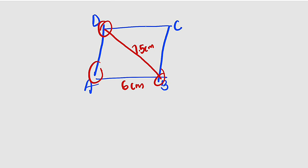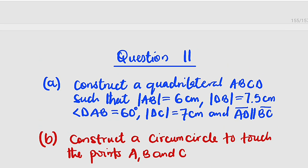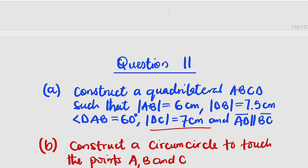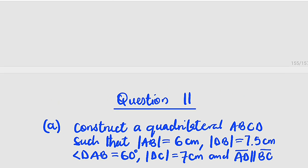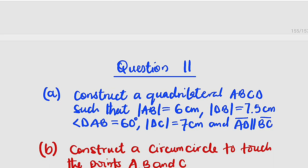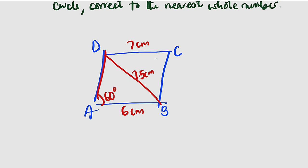Angle DAB is 60 degrees — that is this angle at A, which is 60 degrees. Line DC is 7cm. They said that these two lines are parallel, so mark them to indicate that they are parallel. Because they are parallel, the exterior angle at B must also be 60 degrees — we call them corresponding angles.